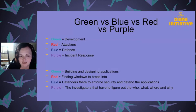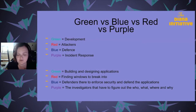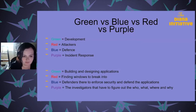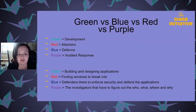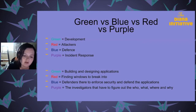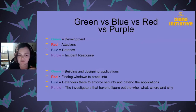What I learned is that to do any one of these roles well, you need to understand the different perspectives. Developers need to understand how red attacks, how blue defends, and what purple needs to solve the crime. Red needs to understand how an application is put together to find the loophole, how blue defends so they can anticipate the defense side, and crucially — what they leave behind, because purple will pick up on any trace left behind. Exploring all of these sections made my purple teaming much better.